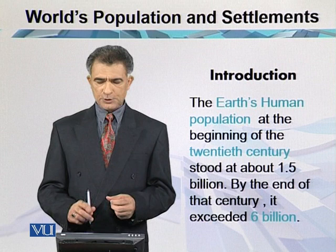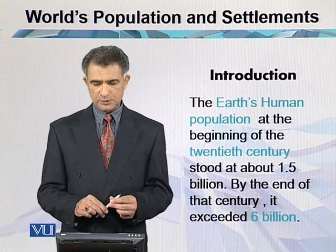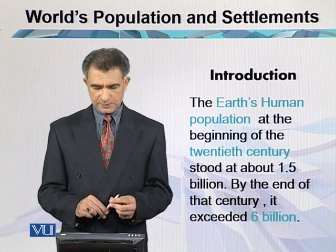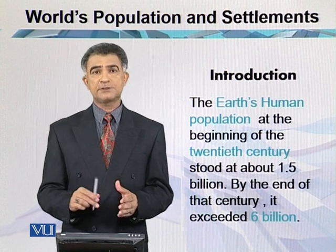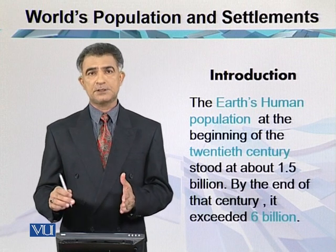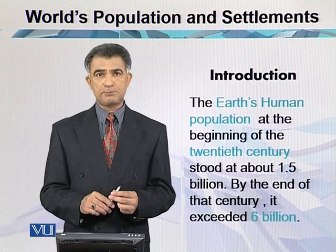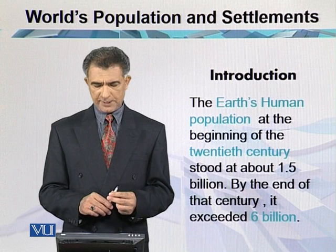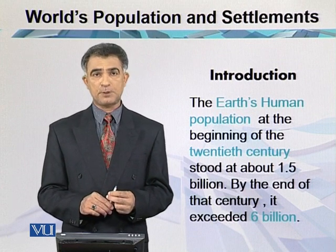Now, the Earth's human population at the beginning of the 20th century stood at about 1.5 billion. This is talking about the start of the 20th century, in which human population was 1.5 billion. But by the end of that century, it exceeded 6 billion.